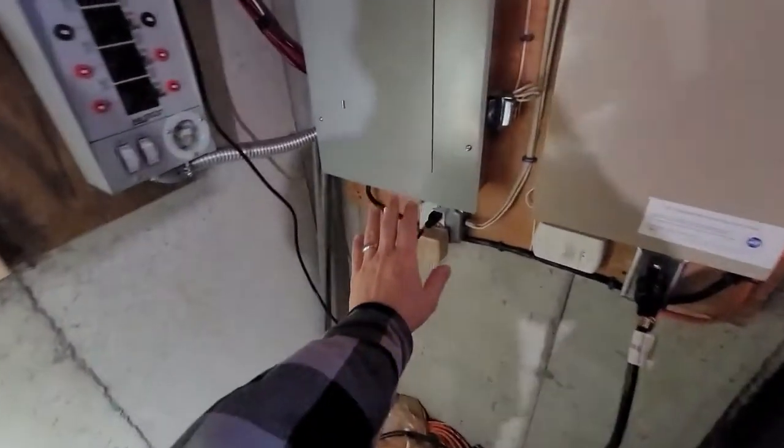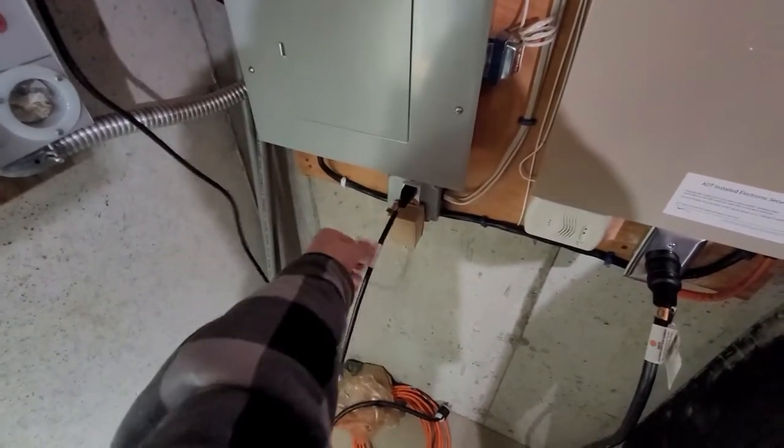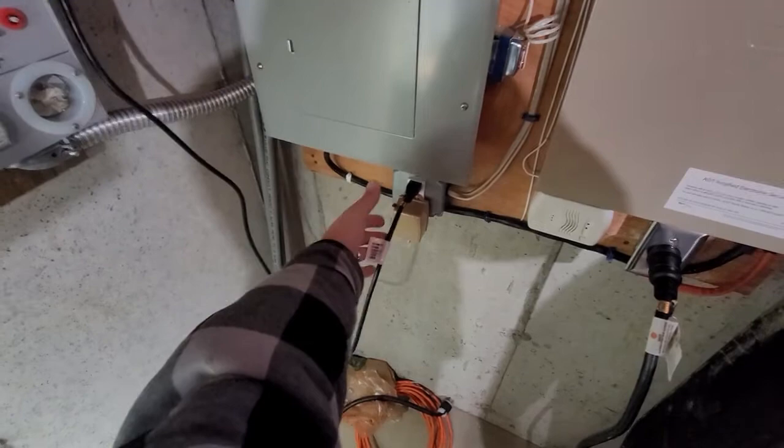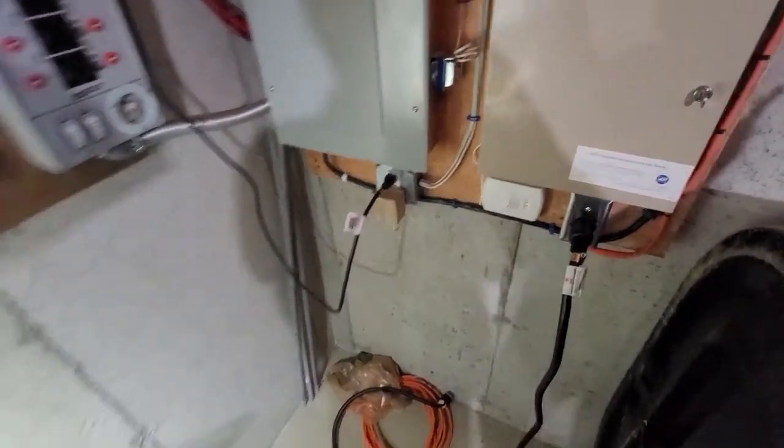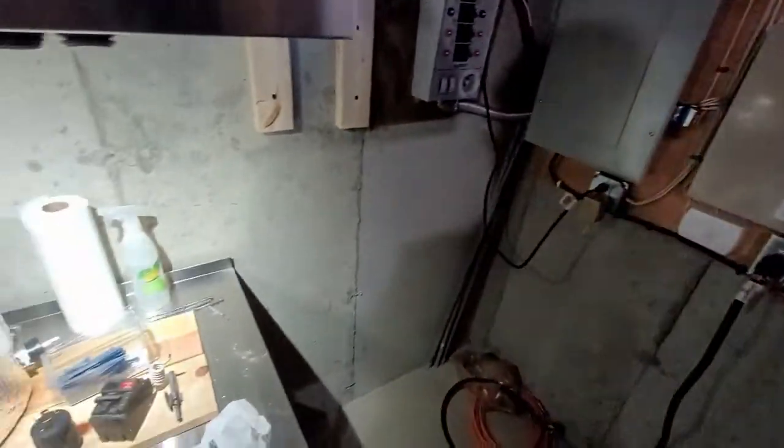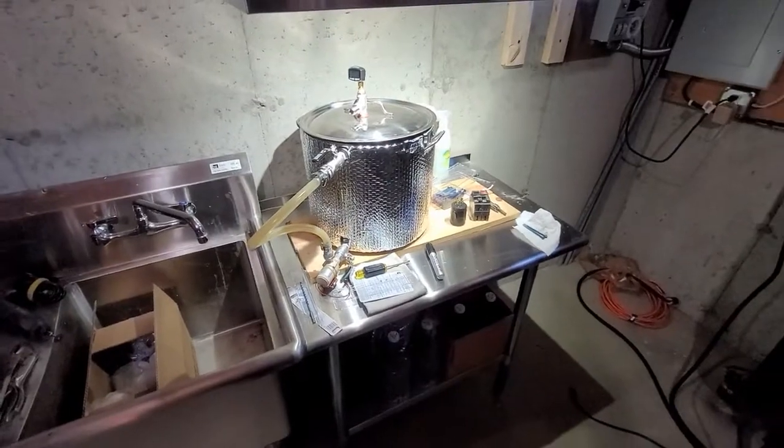The good thing here is that I still have this 20 amp GFCI outlet here. If I wanted to, right now this is just powering the hood and this will eventually power the fan too. But I have more than enough power to run my brewery downstairs. It is a little bit of a mess, it's still under construction, but I'm really liking the way that it is coming out.